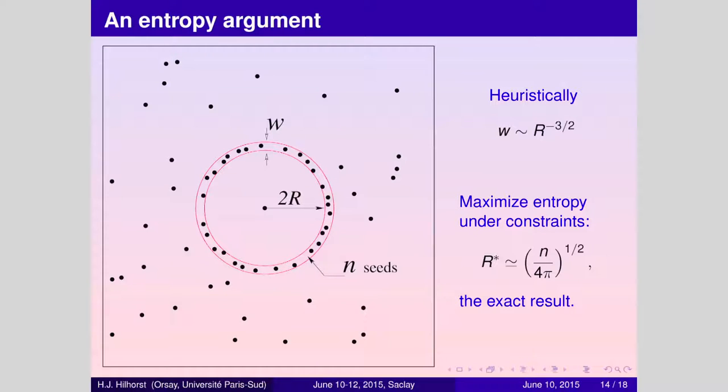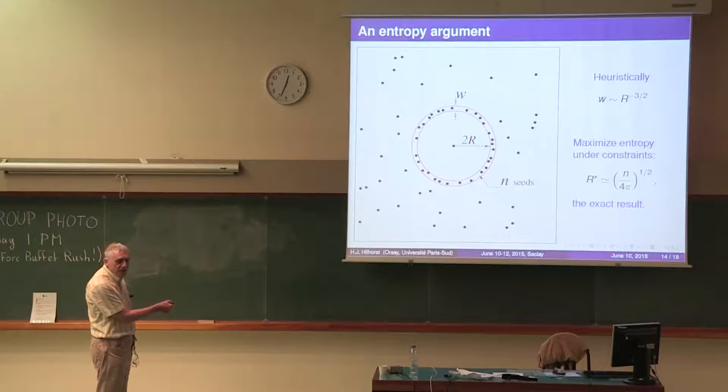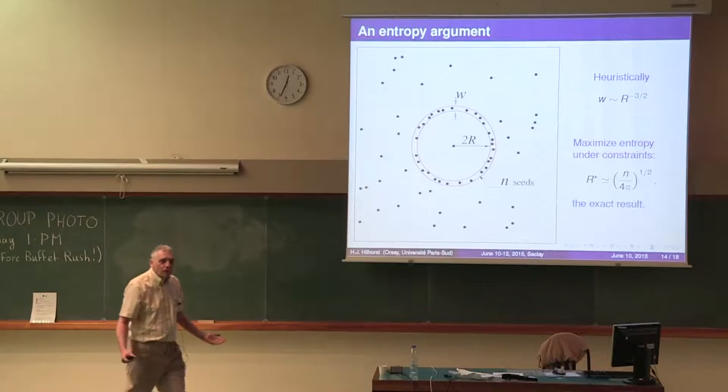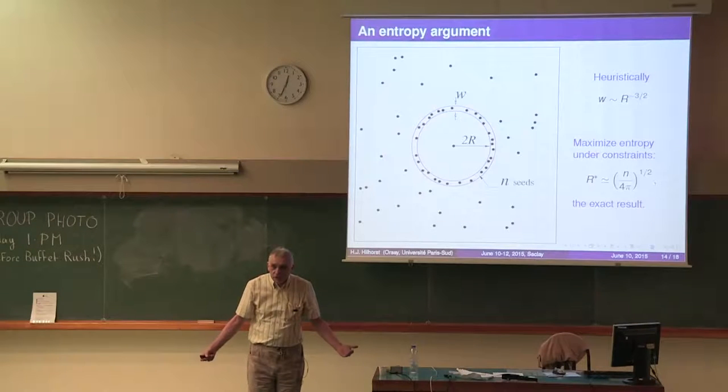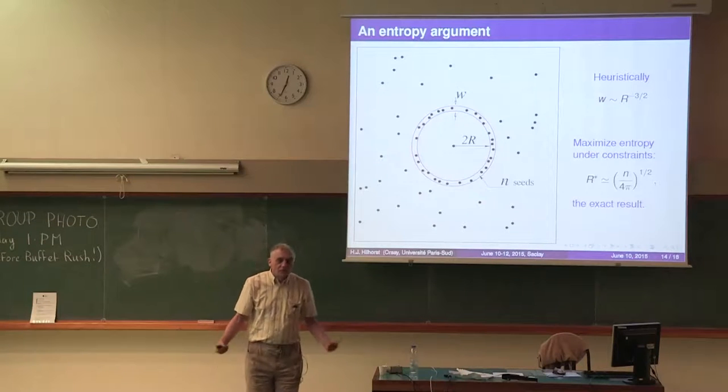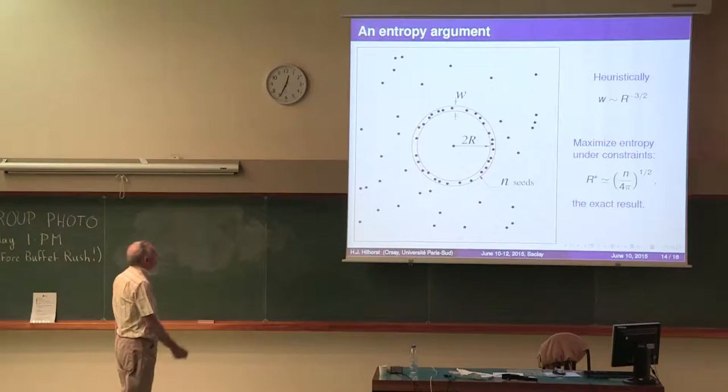Here comes the argument. I have dots randomly distributed uniformly in the plane, and I ask what is the probability that around a central dot there is a sphere of radius 2r that is empty, whereas at the same time I have n dots in an annulus of width w. For independently distributed dots, you can easily calculate that, and there is an entropy cost to that, which depends on w and r. An entropy cost, of course, with respect to a completely random configuration. We can write down the entropy cost.